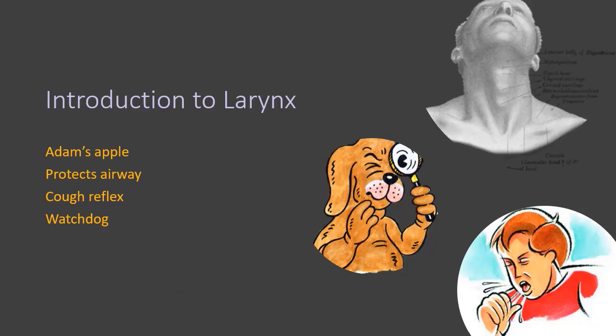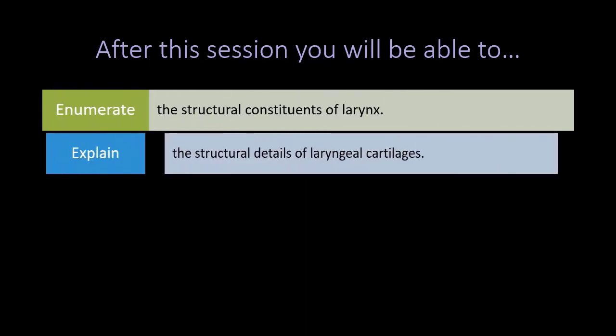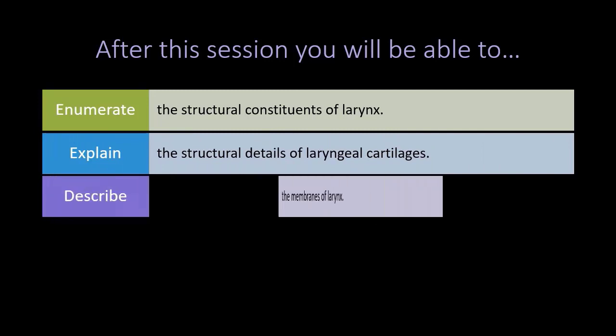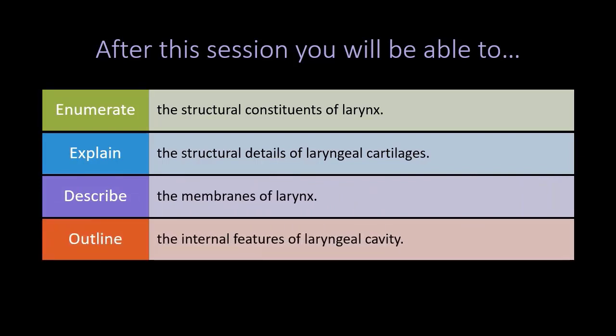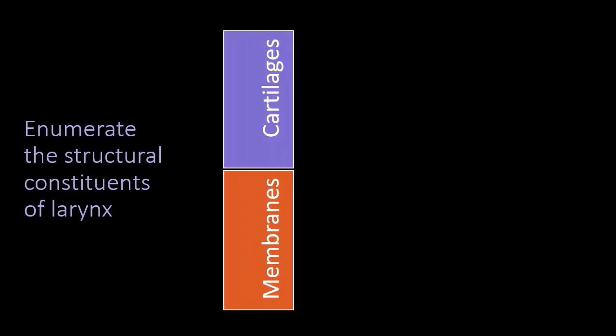The learning objectives for this session are: enumerate the structural constituents of the larynx, explain the structural details of laryngeal cartilages, describe the membranes of the larynx, outline the internal features of the laryngeal cavity, and enlist the sensory innervation and vascular supply of the laryngeal cavity. Now, enumerating the structural constituents: the larynx is made up of cartilages and membranes.